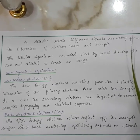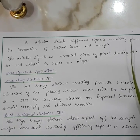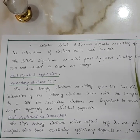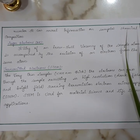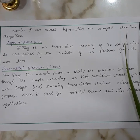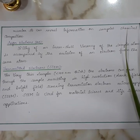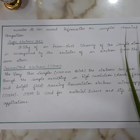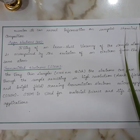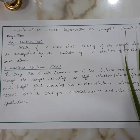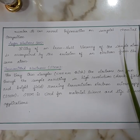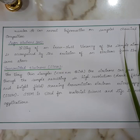Backscattered electrons are the high-energy electrons which reflect off the sample surface. Since backscattering efficiency depends on atomic number, it can reveal information on the sample's chemical composition. Auger electrons are emitted when the filling of an inner-shell vacancy of the sample atom is accompanied by the emission of an electron from the same atom. For very thin samples less than 100 nm thick, electrons can pass through the sample resulting in high-resolution dark field and bright field imaging.